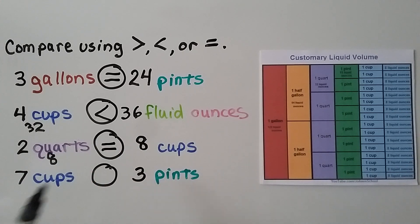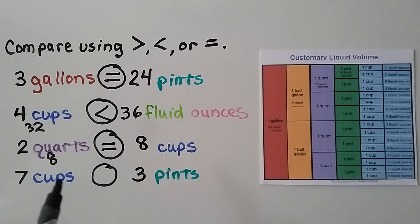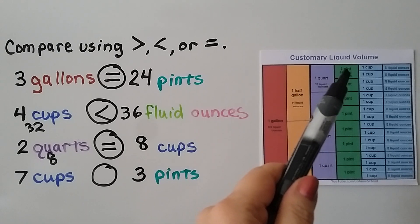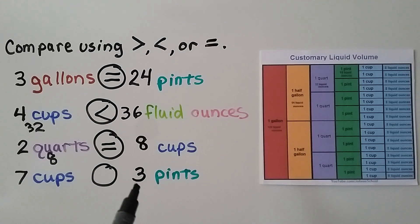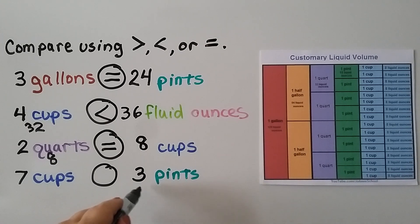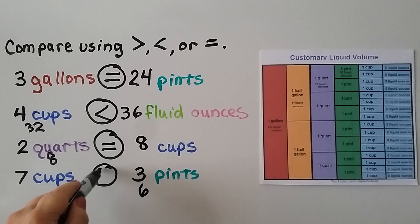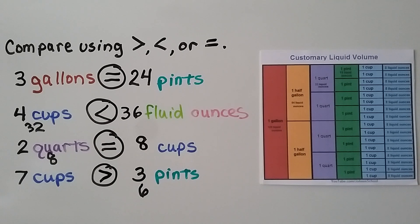Seven cups compared to three pints: let's change the pints into cups. Two cups make one pint, so for three pints we do two times three, which is six cups. Now we're comparing six cups to seven cups. Seven cups is greater than six cups, so seven cups is greater than three pints.